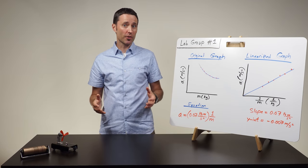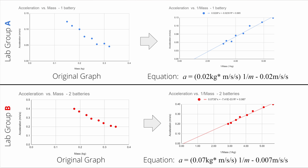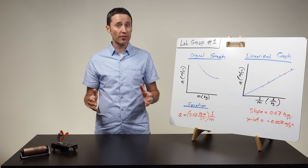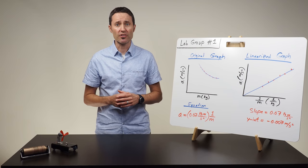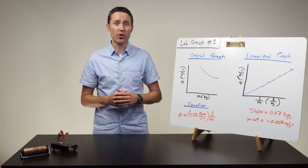Start by asking students to compare the graphs and equations on the whiteboards and identify any similarities or differences they see. Since different numbers of batteries were used in the fan carts, students will be able to identify similar graphical shapes and y-intercept values, but different groupings of slope values. The lab groups who used fan carts with two batteries will have higher slope values than the groups who used fan carts with one battery and one spacer. This will be helpful when students discuss the meaning of the slope. Once the similarities and differences are identified, the rest of the conclusion discussion should focus on the meaning of the slope and the significance of the y-intercept from the linearized graph and equation.